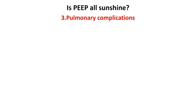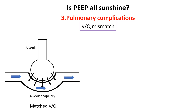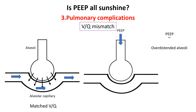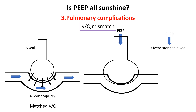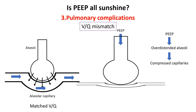The lungs rely on a balance between ventilation and perfusion to ensure efficient gas exchange, called ventilation-perfusion matching. When excessive PEEP is applied, it can lead to overdistension of well-ventilated alveoli, meaning the alveoli expand too much, putting pressure on the surrounding pulmonary capillaries. As a result, these capillaries become compressed, reducing blood flow to those areas. Since these alveoli are still receiving plenty of air but less blood is flowing through them, the VQ mismatch means some areas of the lung are well-ventilated but under-perfused, reducing oxygen exchange efficiency.